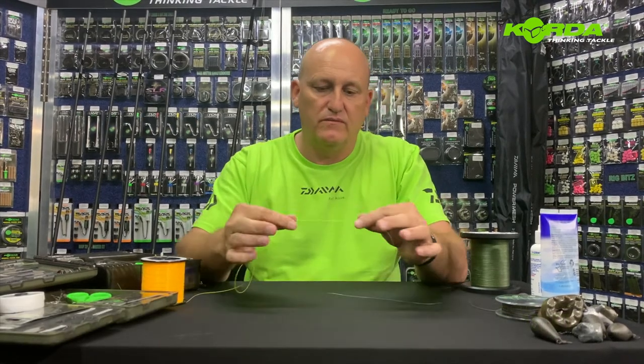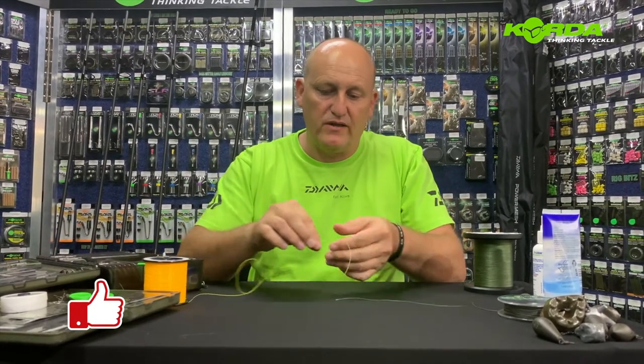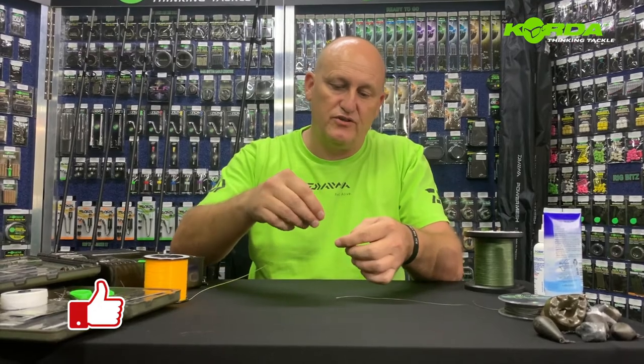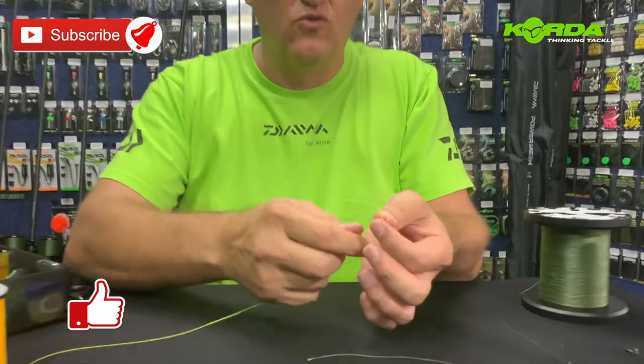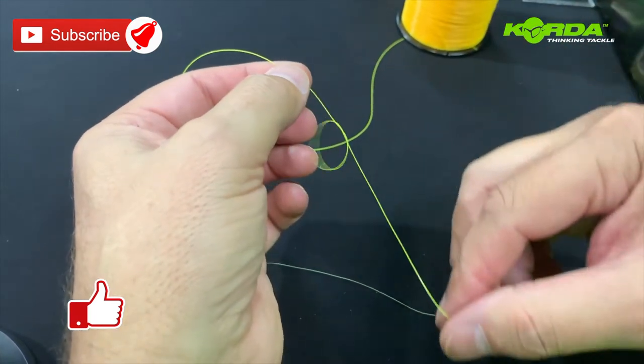The last knot I'm going to cover is a knot known as the Mahin. Now this is my leader line and this is the main line. The way that you go about that is you make just a normal overhand knot like that.